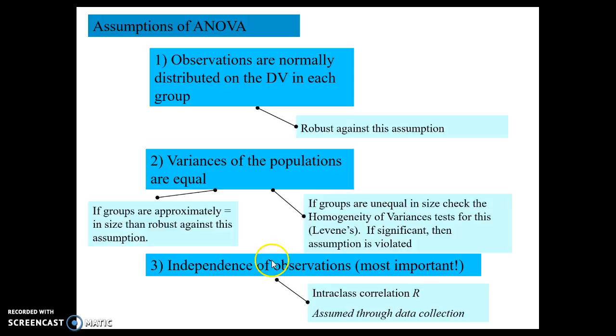Independence of observation is the most important. We assume this through data collection, meaning each person's score is their own score. We can also check this through an interclass correlation. For this class we're just going to assume that everything is independent through data collection.